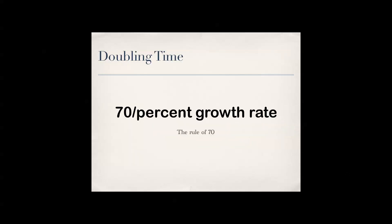Remember the doubling time formula: 70 divided by the percent growth rate. So the doubling time tells you how many years it will take for the population to double — for example, 70 divided by a 0.30 percent growth rate gives you your answer.